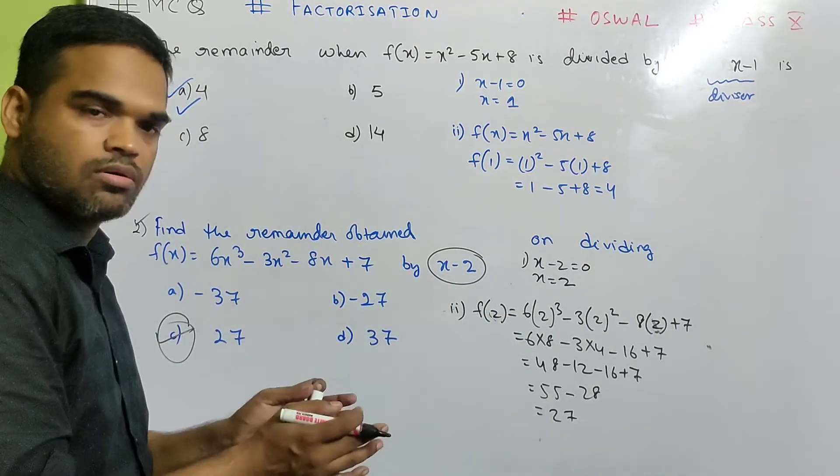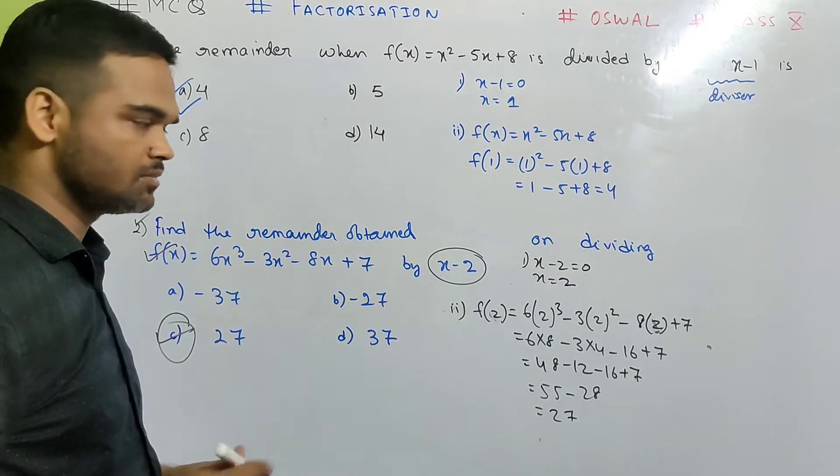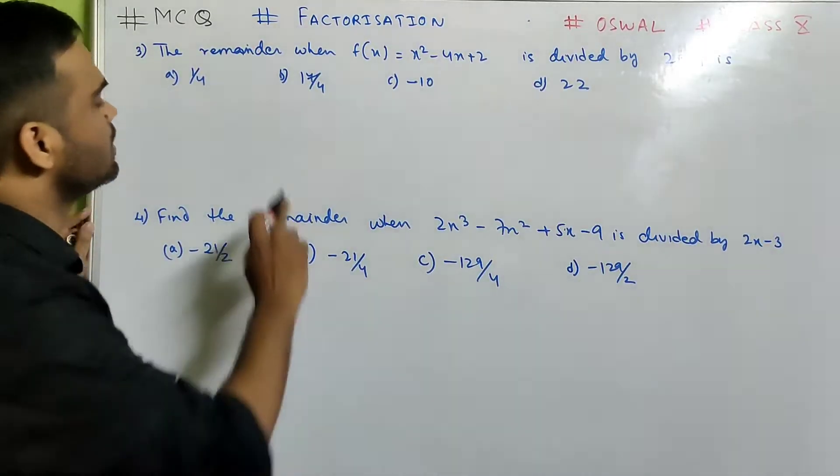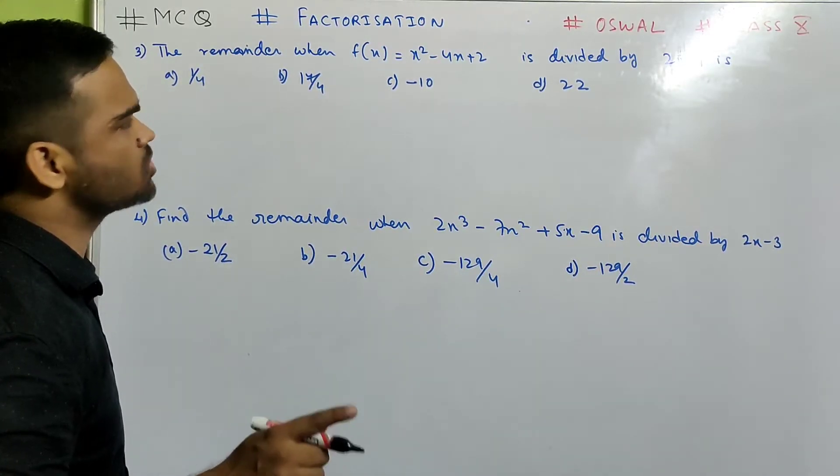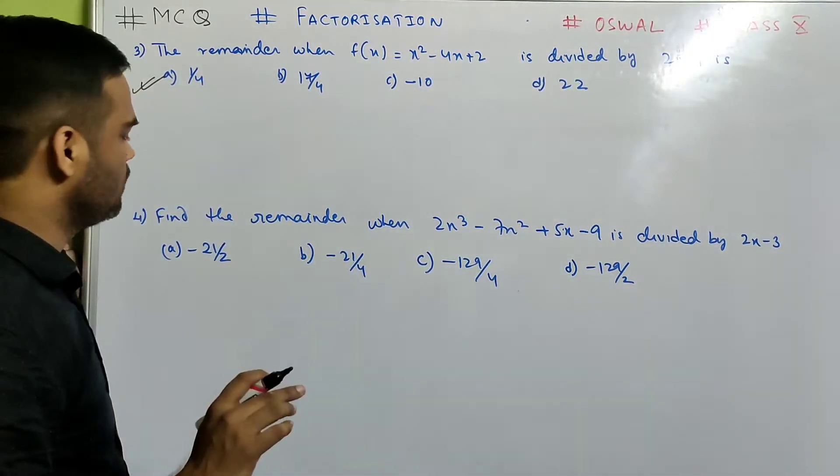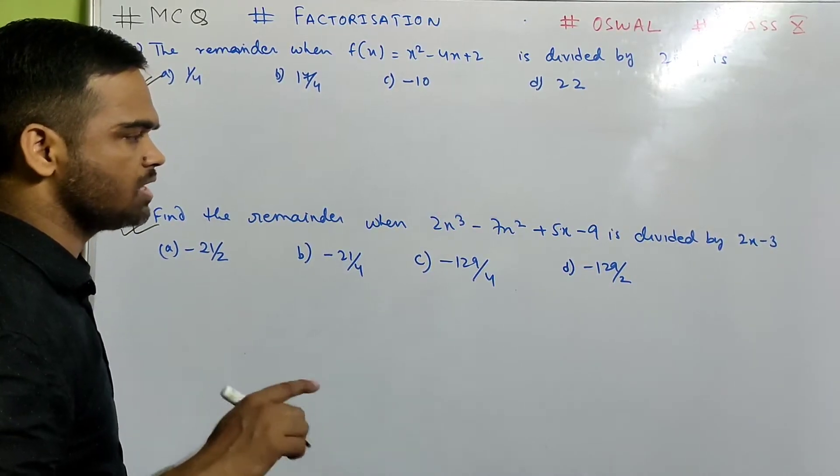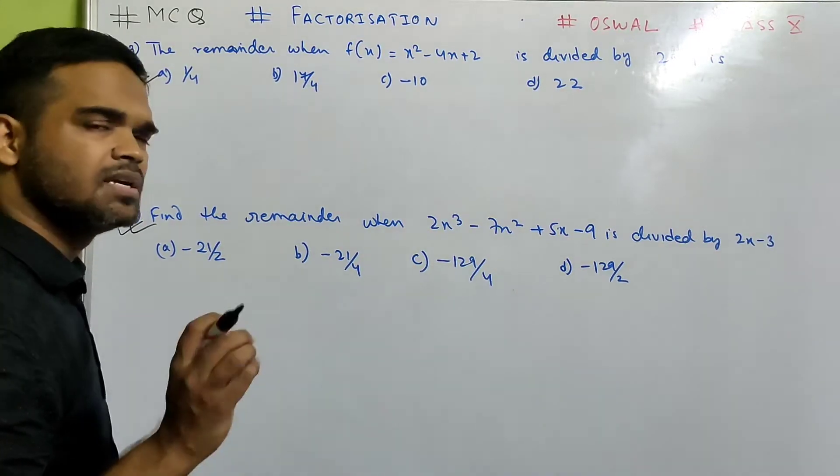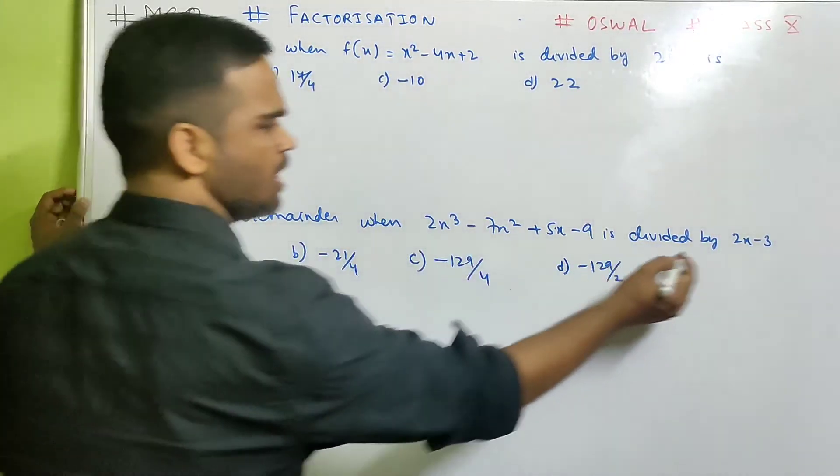Very easy. Just equate the divisor to 0. Get the value of x. Put it in your function. Done. Let us do number 3. Now let us see number 3. The remainder when f(x) equals x square minus 4x plus 2 is divided by 2x plus 1 is same pattern. I am not doing it. You try it on your own. Number 4. Find the remainder when 2x cube minus 7x square plus 5x minus 9 is divided by 2x minus 3. Same way as we saw at 1 and 2. But let us solve it.